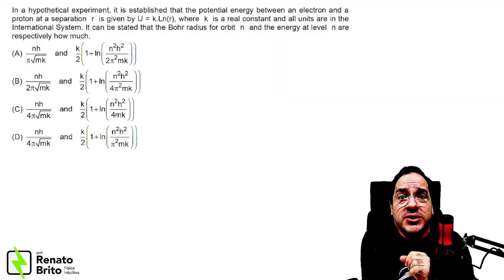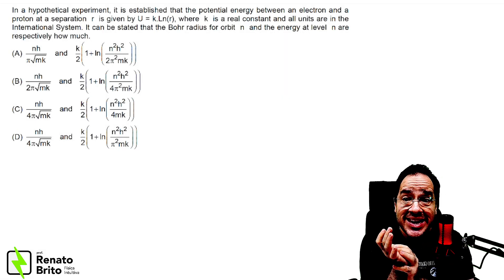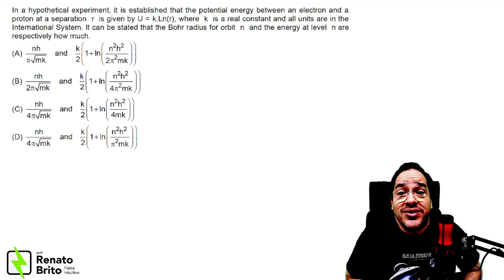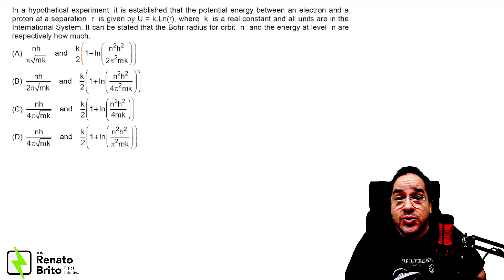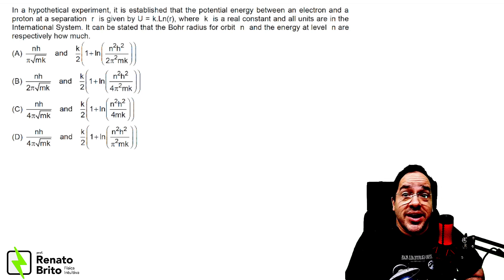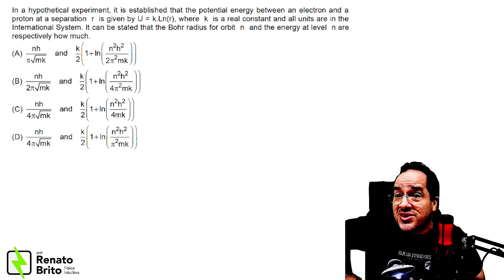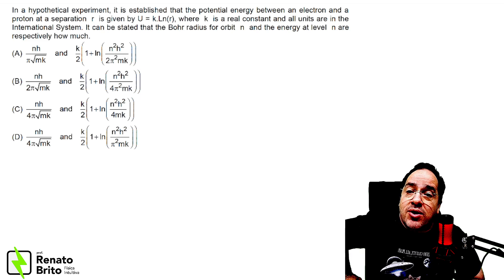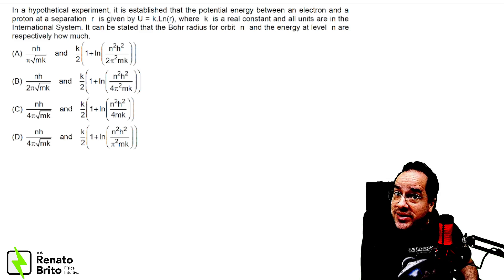Take a look at this very interesting problem. In a hypothetical experiment, it is established that the potential energy between an electron and a proton at a separation r is given by U equals k times the logarithm of the distance r, where k is a real constant and all units are in the international system. It can be stated that the Bohr radius for an orbit n and the energy at level n are respectively how much.